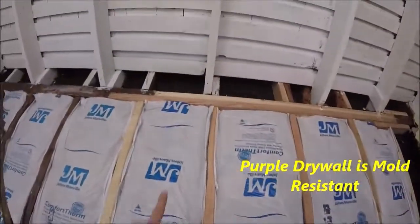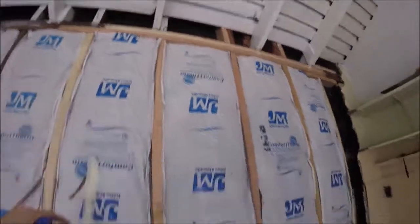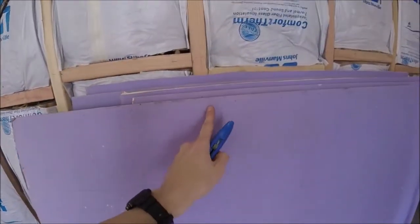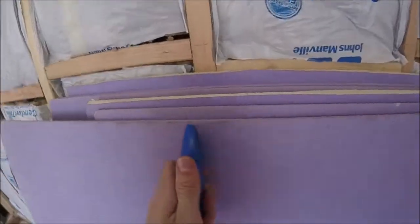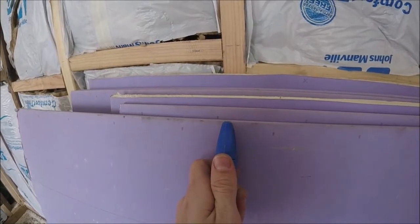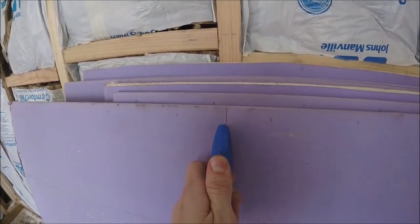So now to cut it we're going to be doing these little spaces up there between the rafters first. To cut it, you're going to trace out where you're going to cut it and then you're just going to score the face of it, so either the white side or the purple side.